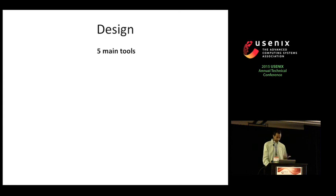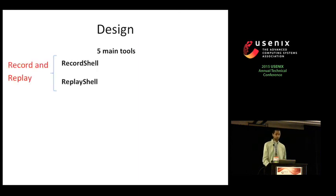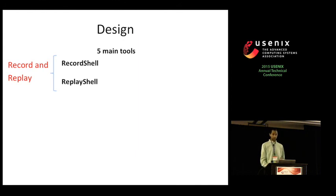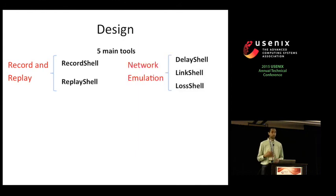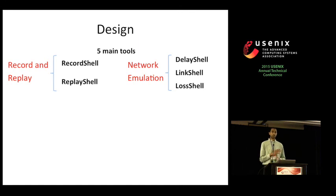MahiMahi has five main tools, each structured as a Unix shell. For record and replay, it includes record shell and replay shell. For network emulation, it includes delay shell, link shell, and loss shell. All of these can be nested within one another to test a variety of different configurations.